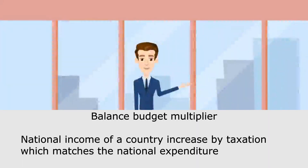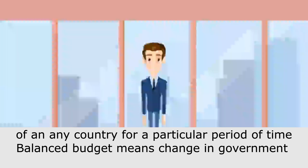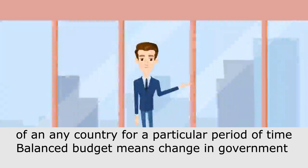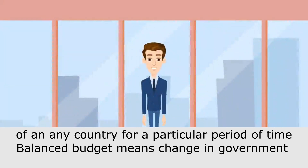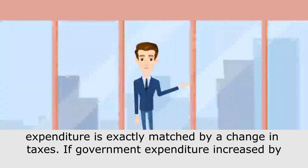National income of the country increases by taxation which matches the national expenditure of any country for a particular period of time. Balanced budget means change in government expenditure is exactly matched by a change in taxes.